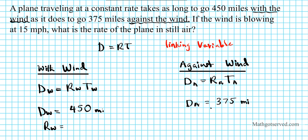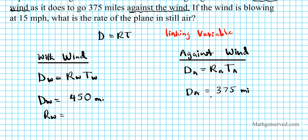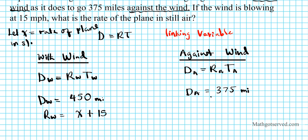How about the rate? We don't know the rate — we're asked to find the rate of the plane in still air. Let x equal the rate of the plane in still air. The rate with the wind is x plus 15, which is the plane's speed plus the wind speed. The rate against the wind is x minus 15. Clearly the rates are different, so rate is not the linking variable either.